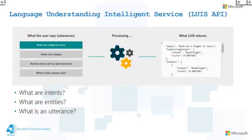The intents represent the actions the user wants to perform — the purpose or goal of the user's input. The entities are instances of a class relevant to the user intent. For example, if I say 'book me a flight to Cairo', 'book a flight' is the intent and 'Cairo' is an entity of type location. The utterance represents an example of a user query or command the application is expected to receive. For example: 'book me a flight to Cairo', 'order me two pizzas', 'remind me to call my dad tomorrow', 'where is the nearest club' — all are utterances, each containing an intent and entities.